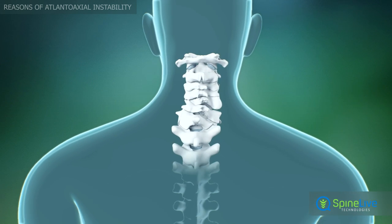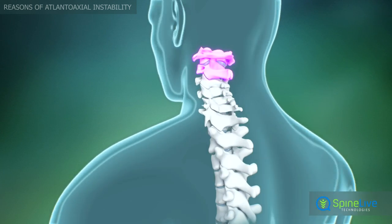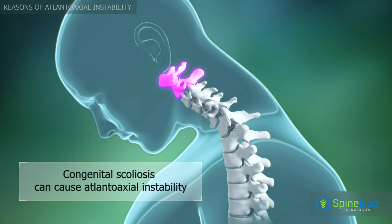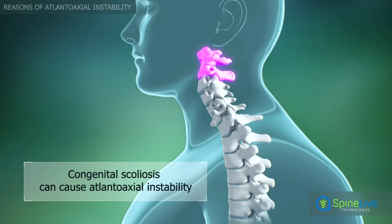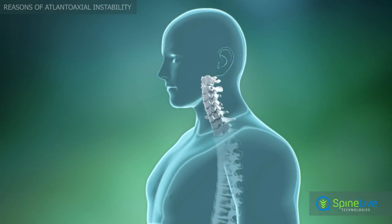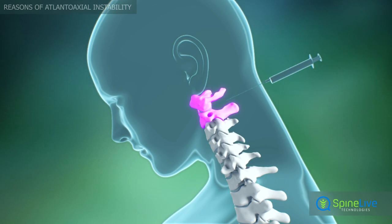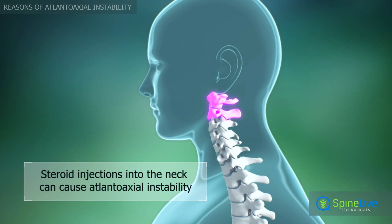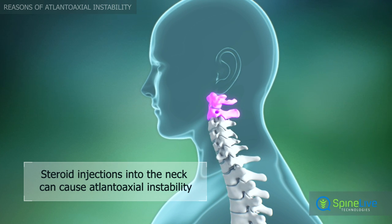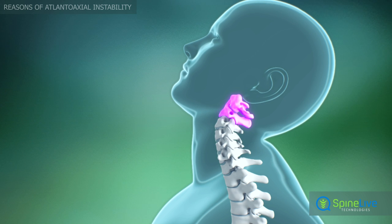In some cases, congenital scoliosis can cause unstable movement between the first and second cervical vertebrae. Steroid injections into the neck may result in pathological changes in the first or second cervical vertebrae, which can lead to atlantoaxial instability.